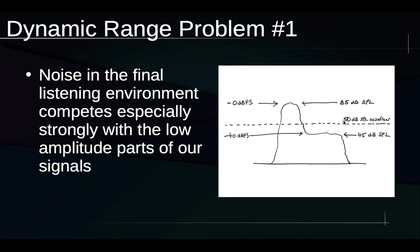So we see problem number one with dynamic range: we set our playback systems so the higher levels produce comfortable sound pressure levels, and as a result the much quieter levels get pushed down close to or into the noise floor, making the quiet parts of our audio harder to hear. And what's the point of producing something if people aren't going to hear it?